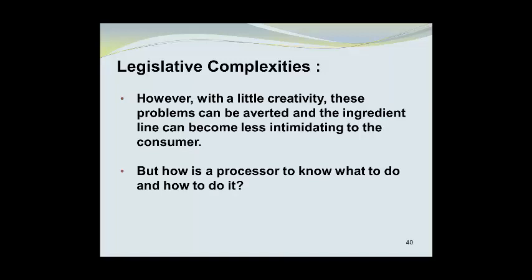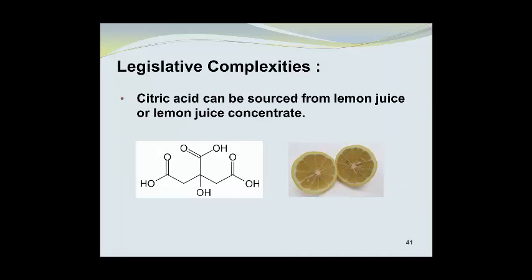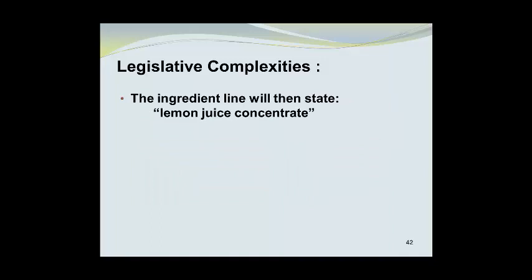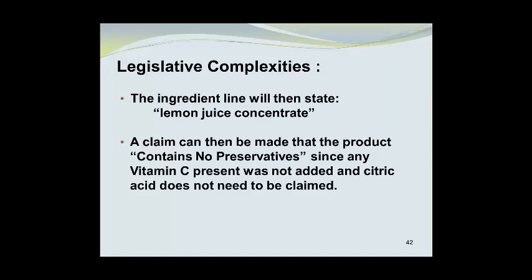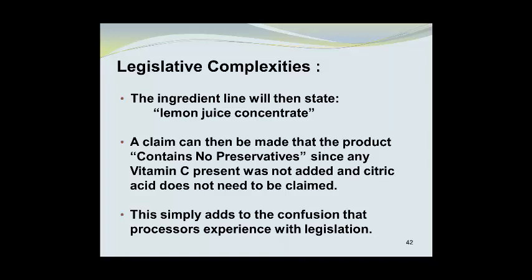However, with a little creativity, these problems can be averted and the ingredient line can become less intimidating to the consumer. Citric acid can be sourced from lemon juice or lemon juice concentrate. The ingredient line will then state 'lemon juice concentrate,' and it should be emphasized that all of this depends upon the laws in effect in the jurisdiction where the juice is being sold. A claim can then be made that the product contains no preservatives, since any vitamin C present was not added and citric acid does not need to be claimed because it came along with the lemon juice concentrate. This simply adds to the confusion that processors experience with legislation.